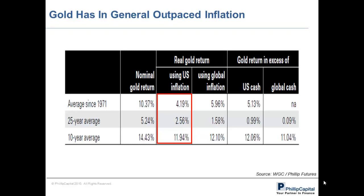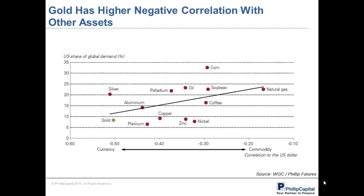Gold in general is a good tool to hedge against inflation. Looking at the chart, gold returns for the past 30 years after including inflation levels in the US still register a good return, with an average of 4.19% return over the years. Based on a 10-year historical average, gold roughly averages a 12% return. Gold also serves as a useful diversification tool in your portfolio and is mostly negatively correlated with other major asset groups. As we can see from the chart, gold tends to correlate negatively to other major commodities such as silver, aluminium, palladium, oil, soybean, corn, coffee, and natural gas.